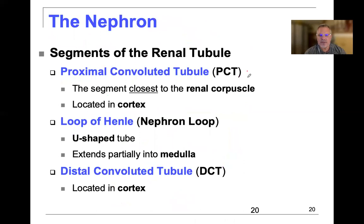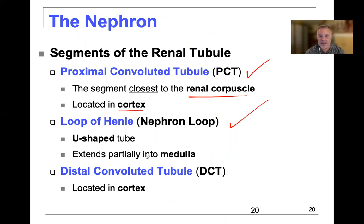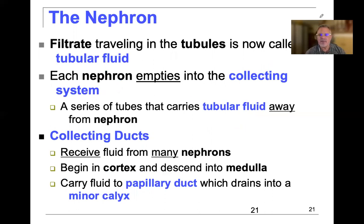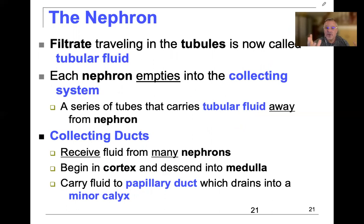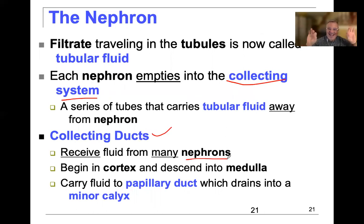The proximal convoluted tubule is the segment closest to the Bowman's capsule or renal corpuscle, and it's located in the cortex. The loop of Henle is the U-shaped tube that extends into the medulla. The distal convoluted tubule is also found primarily in the cortex. The filtrate traveling in the tubules becomes tubular fluid, and each nephron empties into the collecting duct or collecting system. The collecting ducts receive fluid from many nephrons, beginning in the cortex, descending into the medulla, and carrying fluid to the papillary duct, which drains into the minor calyx.